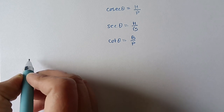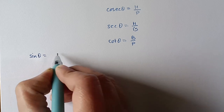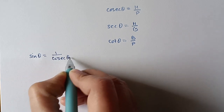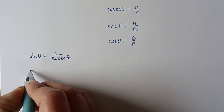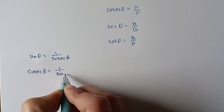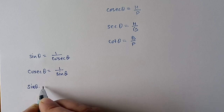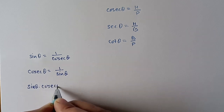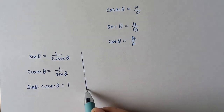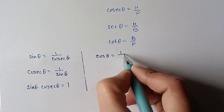We can write: sin theta is equal to 1 upon cosec theta, or cosec theta is equal to 1 upon sin theta. Similarly, sin theta multiplied by cosec theta is equal to 1. We can use this reciprocal relationship in any way. Same way, cos theta is the reciprocal of sec theta, so cos theta and sec theta are reciprocals of each other.